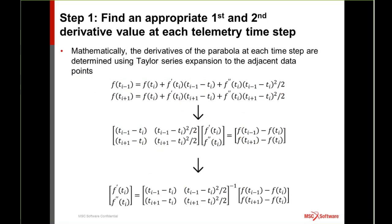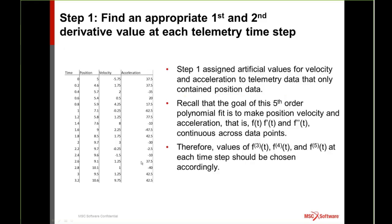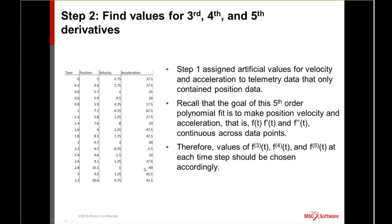This is just the matrix math you would do using that Taylor series to determine what those first and second derivatives are. Down at the bottom, you see it's just a multiplication of a 2×2 matrix by a 2×1 vector.